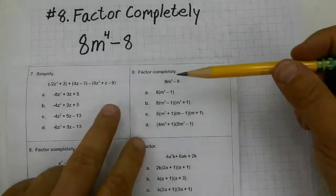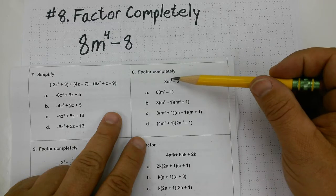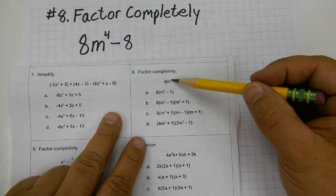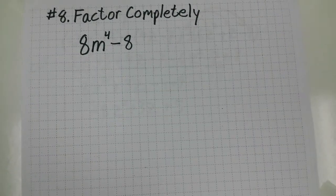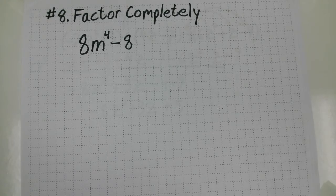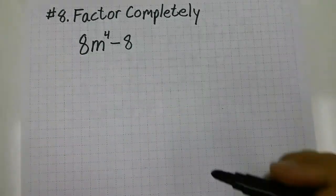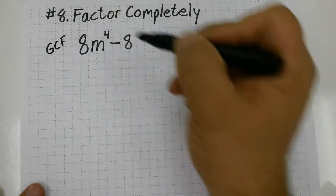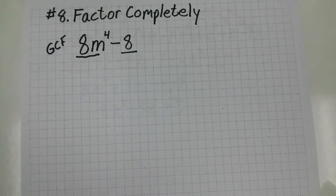Number eight on the PERT practice says factor completely, and this looks like a pretty short and sweet problem, but that x to the fourth power is the trick that's going to be the pitfall for this one. So what I'd like to do first is pull a GCF out of this. To me, it looks like the greatest common factor is going to be an 8, so I'm going to divide each term by an 8.